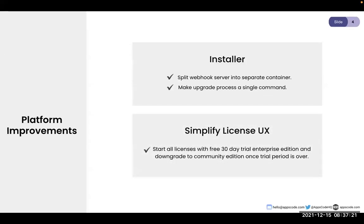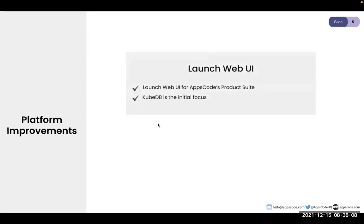Another improvement is around licensing. Today when you install our product you have to decide whether to get a community or enterprise license. The way we're looking to improve this is: you will always get an enterprise license by default for a 30-day trial period. After 30 days, if you don't upgrade to an enterprise product, it will simply downgrade to a community license — so you don't have to make those decisions upfront. It simplifies the installation process.